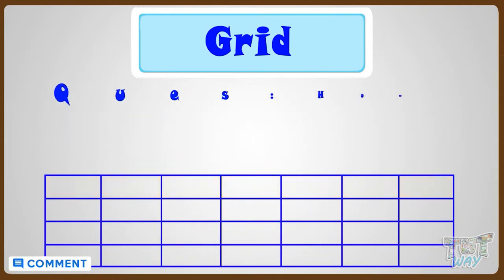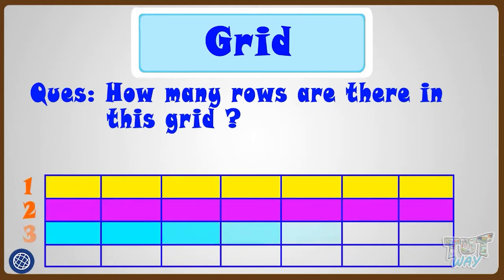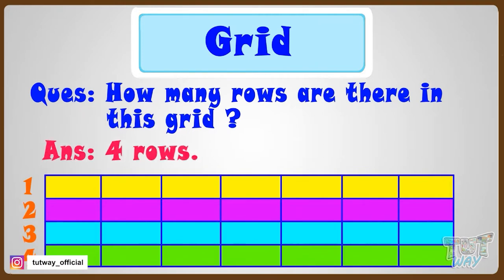Now let's see how many rows are there in this grid. One, two, three, four. So there are four rows in this grid, and we can name the rows by numbers or alphabets.